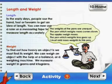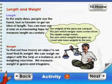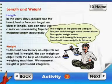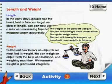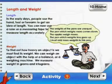Weight. To find out how heavy an object is, we must find its weight. We can weigh an object with the help of a balance or a weighing machine. We measure weight in grams and kilograms.